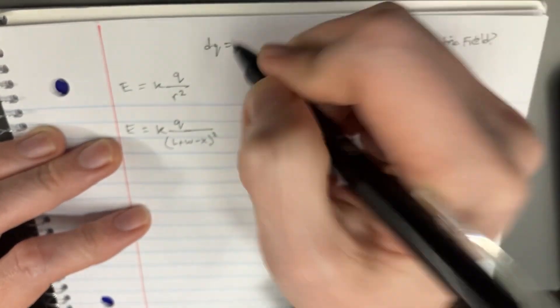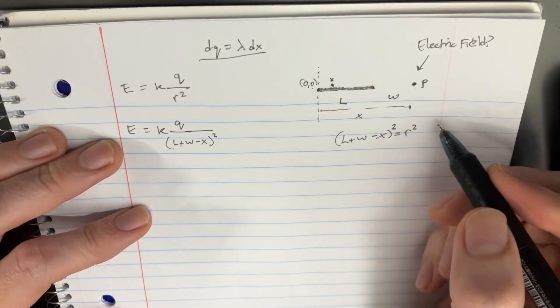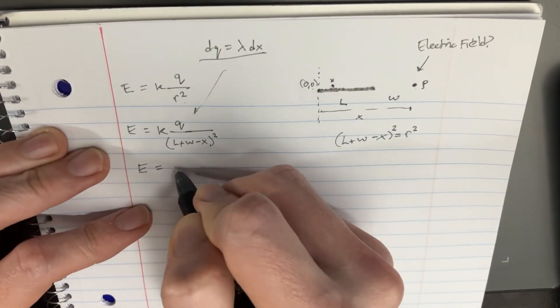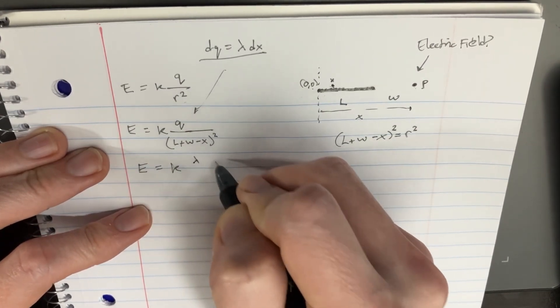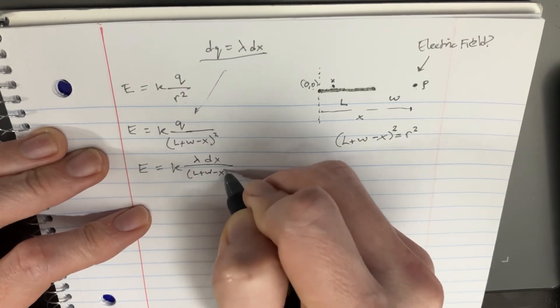Now let's try DQ is going to be equal to lambda DX, right? Because it's in the X direction. And so that's pretty easy. We'll just plug that right in there. E equals K lambda DX over L plus W minus X squared.